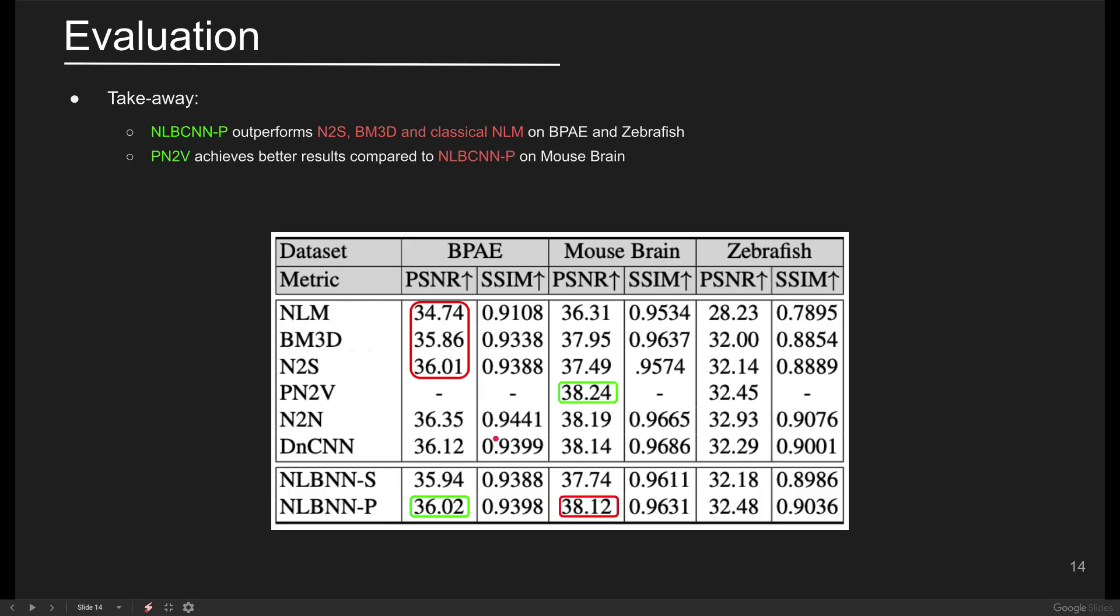For the mouse brain set, NLBCNNP fails to beat the probabilistic noise-to-void model, but it performs slightly better than it in the zebrafish set.